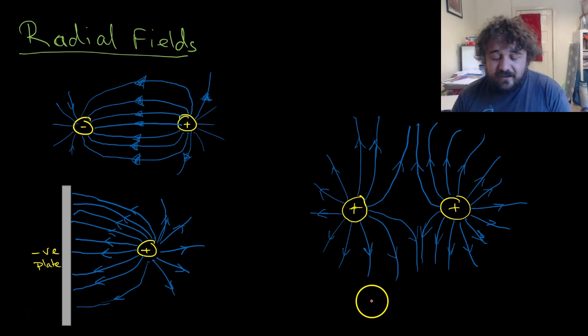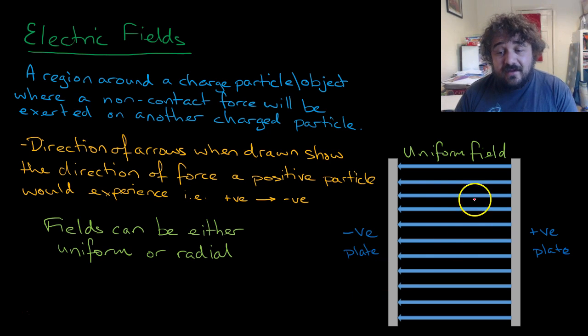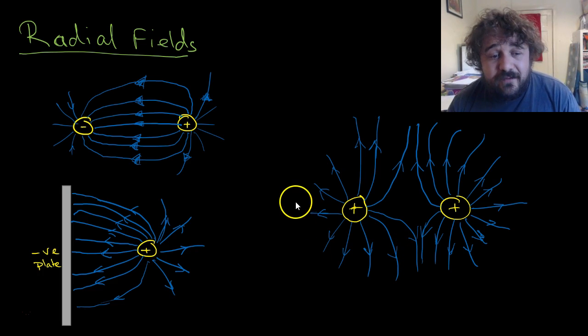Here we have radial fields. So you have uniform fields or radial fields. This is pretty much a uniform field from a positive plate to a negative plate. Then we have the radial fields.